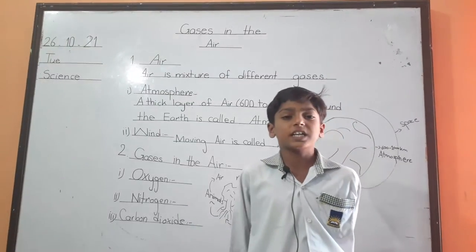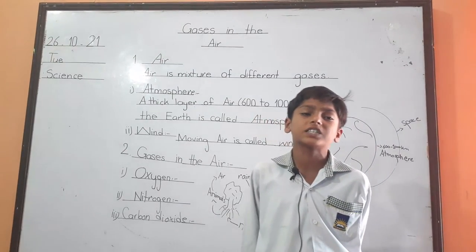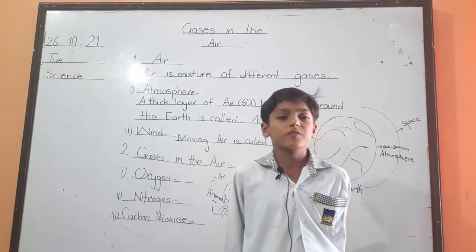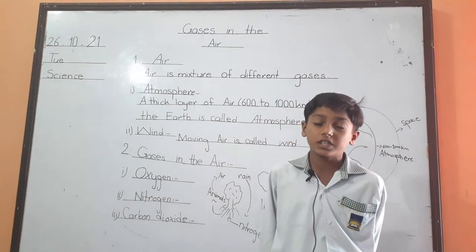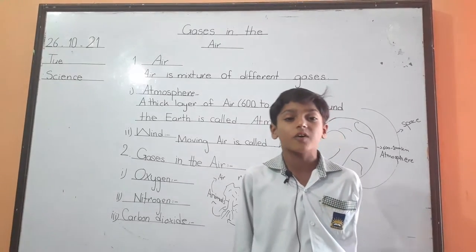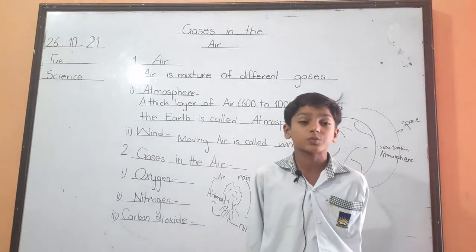Oxygen is also dissolved in water. Plants and animals live in water. They use dissolved oxygen in respiration.